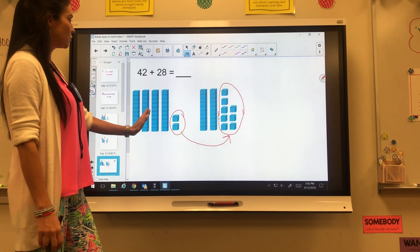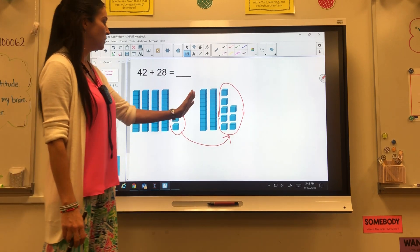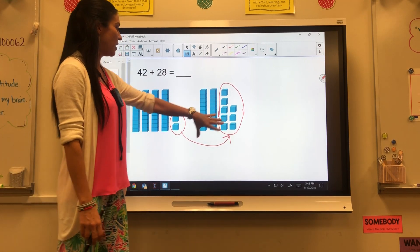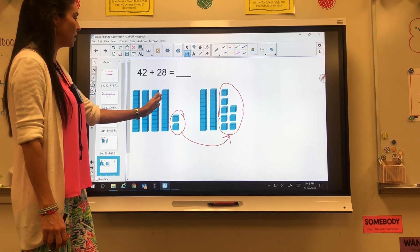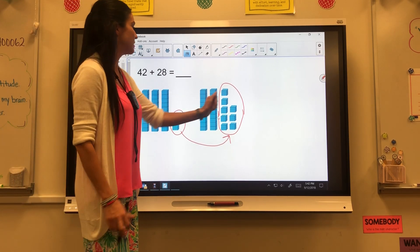So we're going to count 10, 20, 30, 40, 50, 60, and then we have that that's going to be 70. So 10, 20, 30, 40, 50, 60, 70.